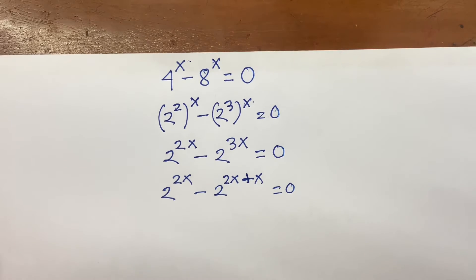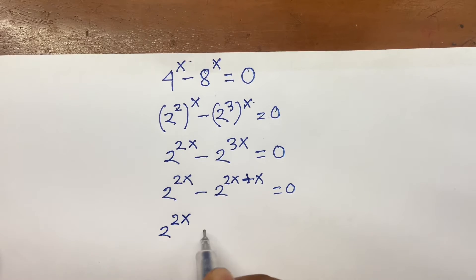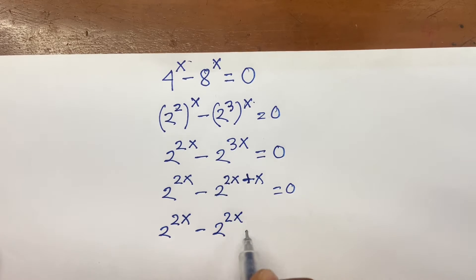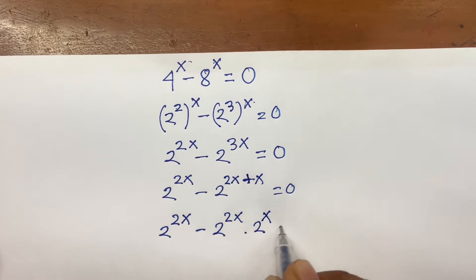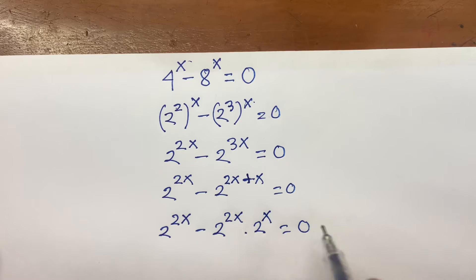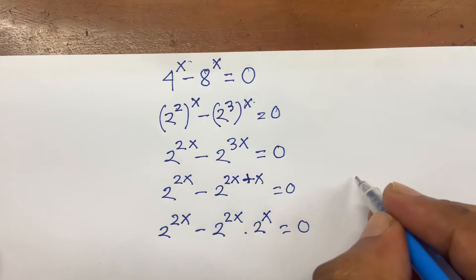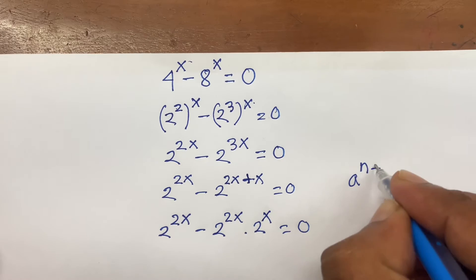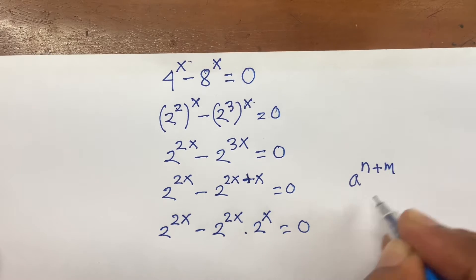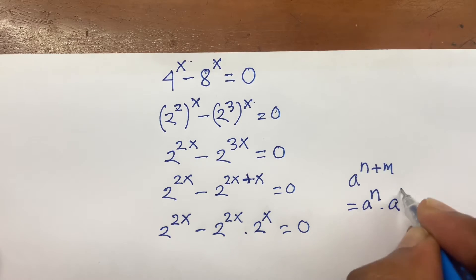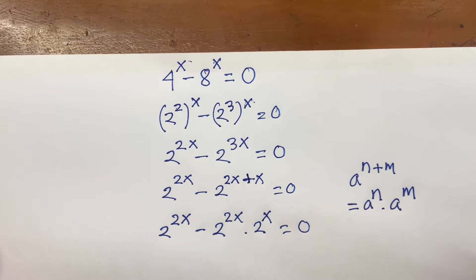Then, I can say here is 2 to the power 2x minus 2 to the power 2x times 2 to the power x is equal to 0. According to these tools, we know that a to the power n plus m is equal to a to the power n times a to the power m.